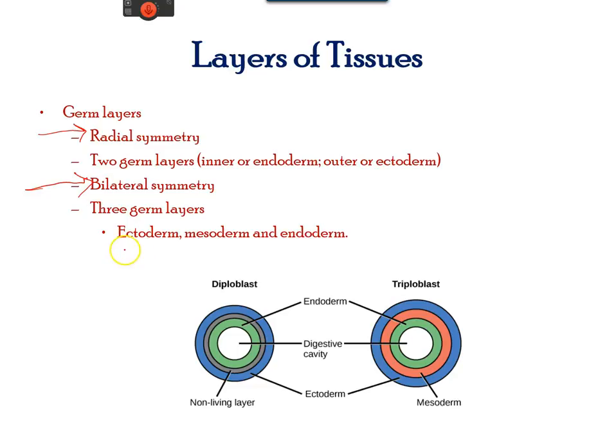The three germ layers are ectoderm, mesoderm, and endoderm. The ectoderm differentiates into the central nervous system, the epidermis, and the hair. The endoderm develops organs such as the stomach, liver, lungs, and intestines. The mesoderm provides red blood cells and bone tissue. Diploblasts develop with two germ layers and triploblasts with three germ layers.